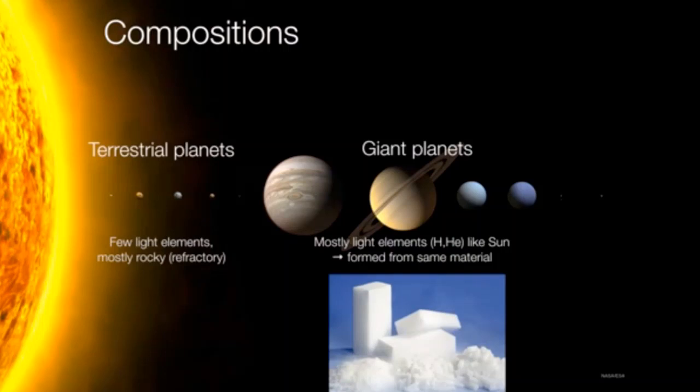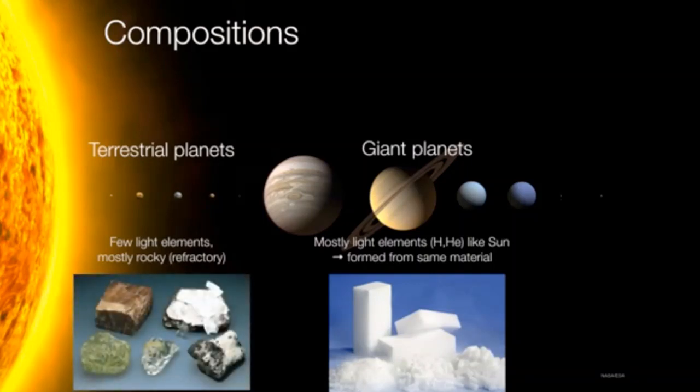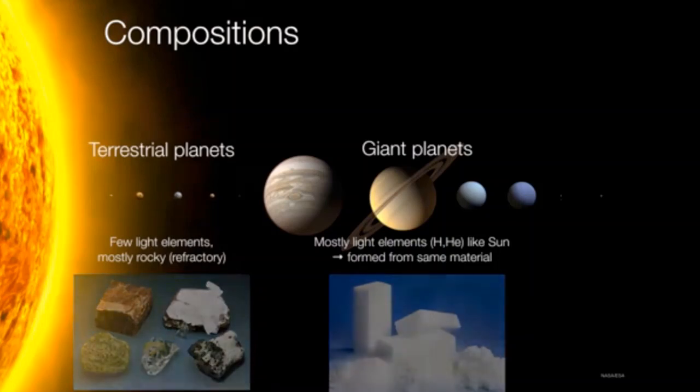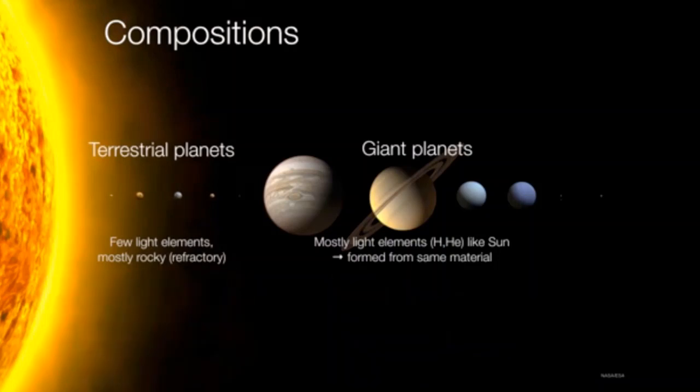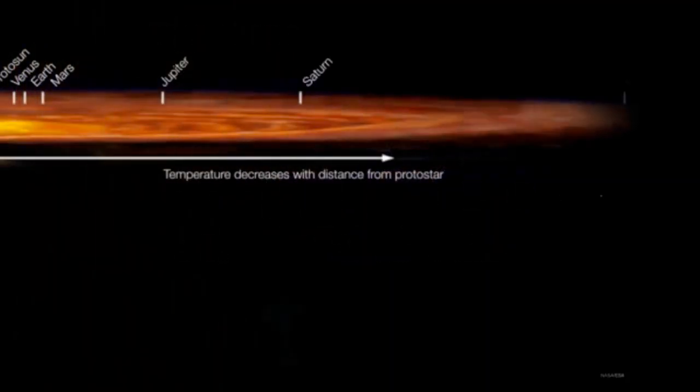Terrestrial planets, on the other hand, have relatively few of these lightweight elements. They are mostly composed of rocky refractory materials like minerals and aluminum.